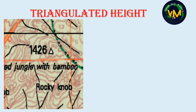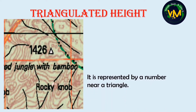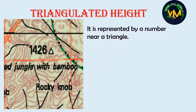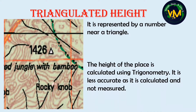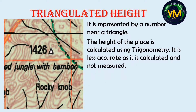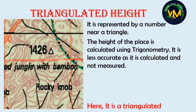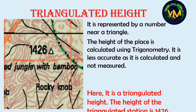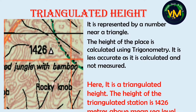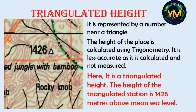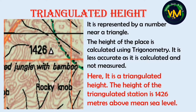Number two is triangulated height. It is represented by a triangle with a number near it. This height is not a measured height — it is calculated using trigonometry, so it is less accurate. In the exam if you are asked what is this triangle 1426, you will answer: it is a triangulated height, and the height of the triangulated station is 1426 meters above sea level. The words 'triangulated height' and 'above sea level' are very important.